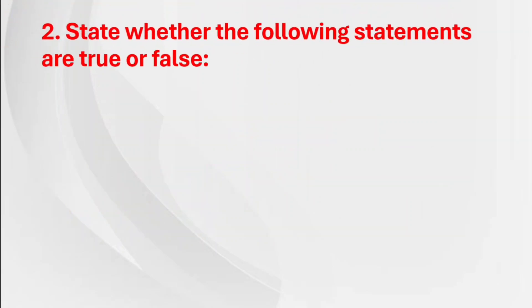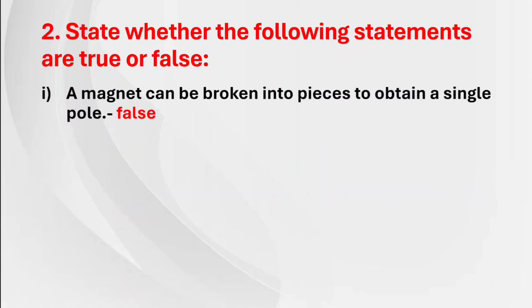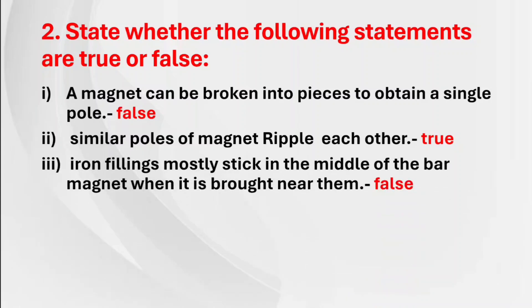Second main: state whether the following statements are true or false. First: a magnet can be broken into pieces to obtain a single pole — False. Second: similar poles of a magnet repel each other — True. Third: iron filings mostly stick in the middle of the bar magnet when it is brought near them — False.